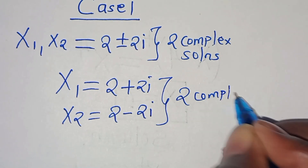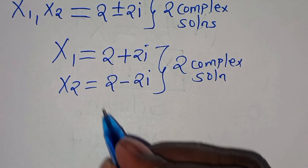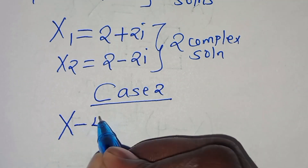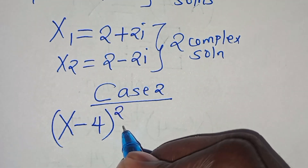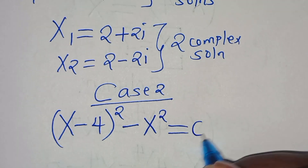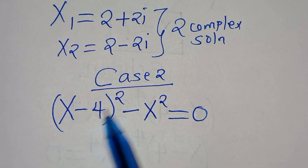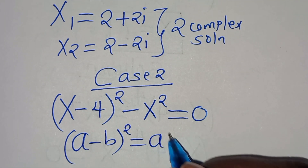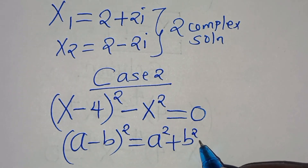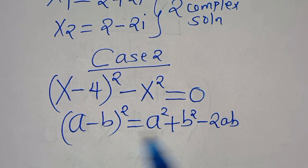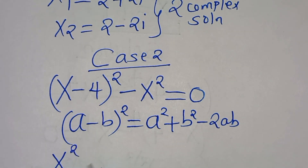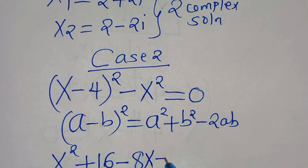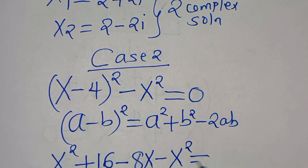Now let's proceed to case 2. In case 2, we have (x subtract 4) raised to the power of 2 subtract x to the power of 2 equals 0. Applying the same identity, (x minus 4) squared expands to x squared plus 16 minus 8x, giving us x squared plus 16 minus 8x subtract x squared equals 0.